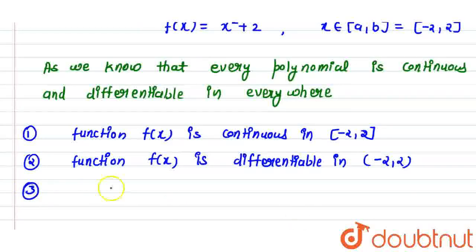And the third condition is f(a) is equal to f(b). That means a is minus 2, so f of minus 2 is minus 2 whole square plus 2. So 2 times 2 is 4 plus 2 is 6.